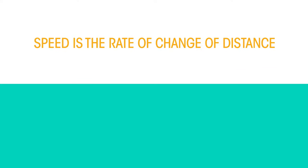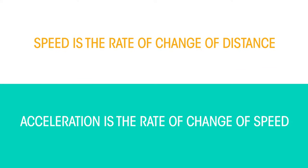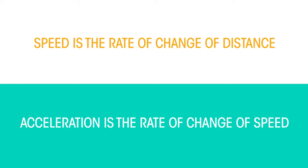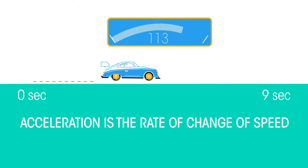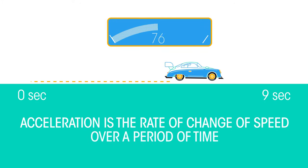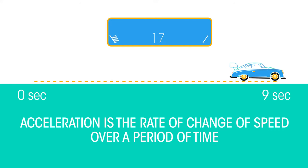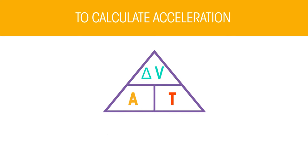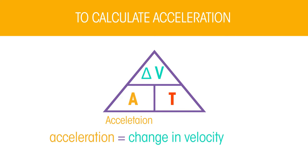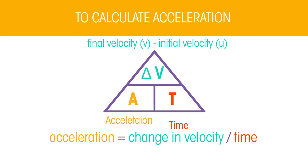In the same way that speed is the rate of change of distance, acceleration is the rate of change of speed. This means that the acceleration of an object is a measure of how much its speed changes over a given period of time. To calculate acceleration we use the following equation: acceleration is equal to change in velocity divided by time.